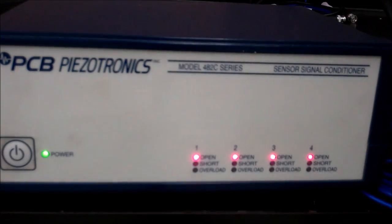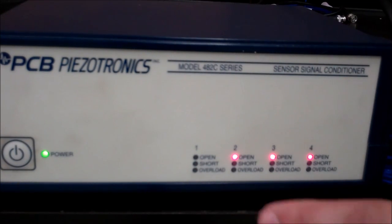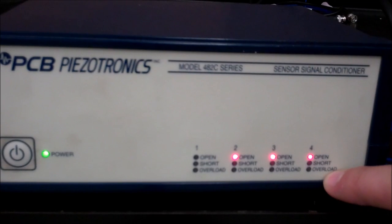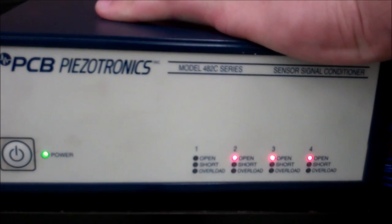And then if you don't have an accelerometer hooked up to the system, you will see this little open light lit up, meaning it's not connected. But then once you connect the accelerometer to the system, you'll notice that the light goes out while the other channels are still lit up. So this is how you connect for one degree of freedom.